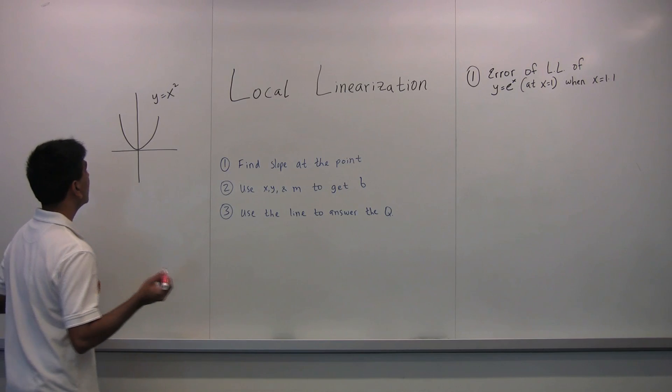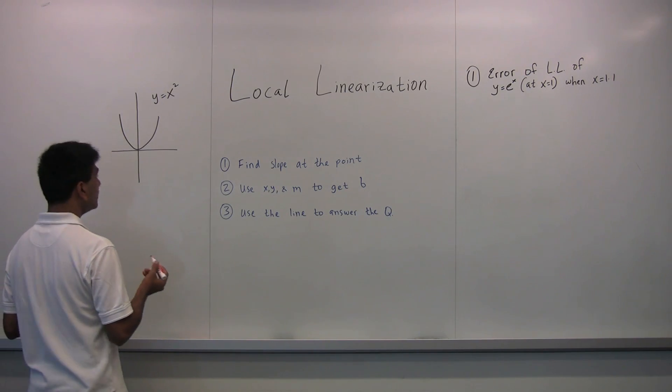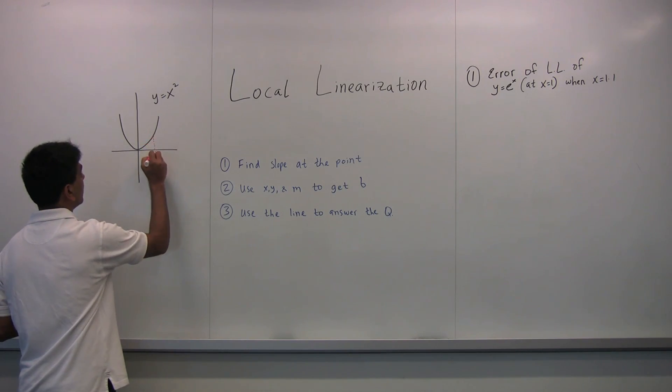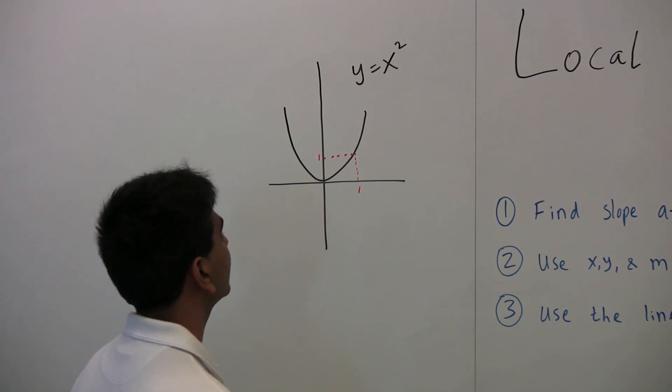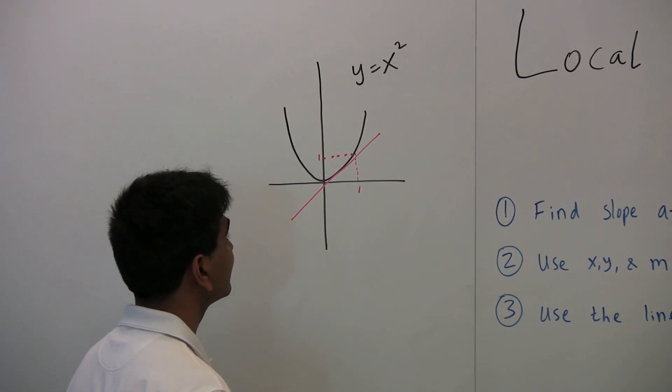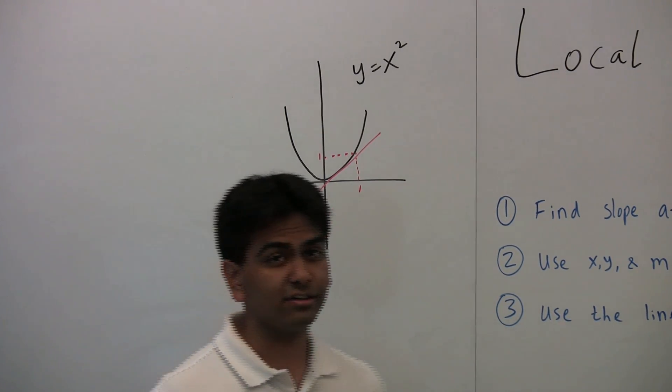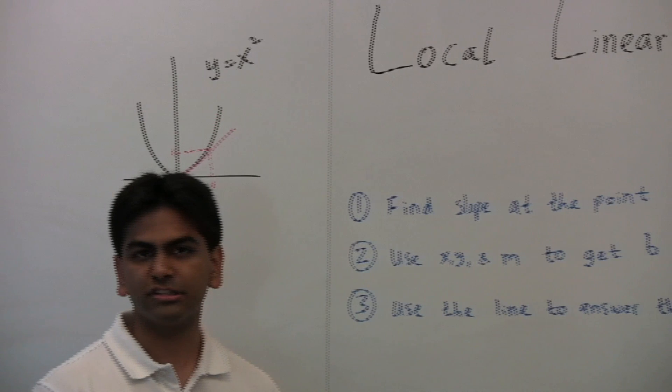So in this function, y equals x squared, looking at this beautiful parabola, let's say that we want to find the local linearization around x equals 1. So we want to find what a line would look like, something like this, when x is equal to 1. So how do you do local linearization? How do you find this line? Well, there are three basic steps that we use here at FFS.